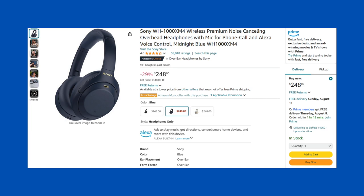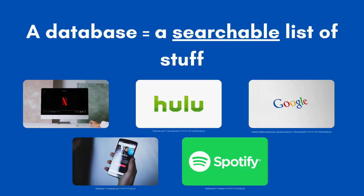A database is basically just a searchable list of stuff. The key here is being searchable. If you think about it, you probably use databases all the time, such as Netflix or Hulu to watch movies and shows, and Spotify or Apple Music to listen to songs. The course catalog is a searchable list of courses you can take, so it too is a database. Even Google, a searchable list of the internet, is a database. Remember, a database is just a searchable list of stuff.